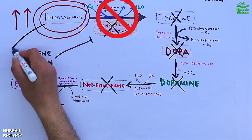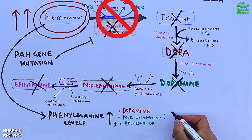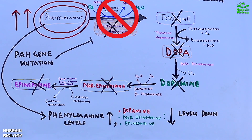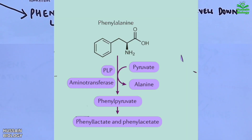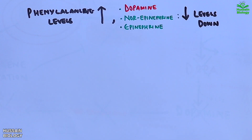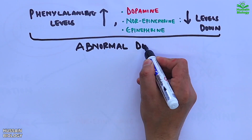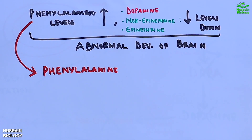The final outcome of this mutation is accumulation of phenylalanine — phenylalanine levels shoot up in the blood while dopamine, epinephrine, and norepinephrine come down. The elevated levels of phenylalanine accumulate and are also converted to phenylketones, which are harmful to the brain when levels are high. These factors — phenylalanine up and other hormones down — adversely affect and damage the brain.